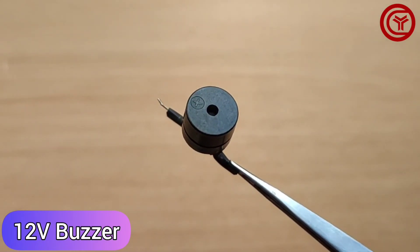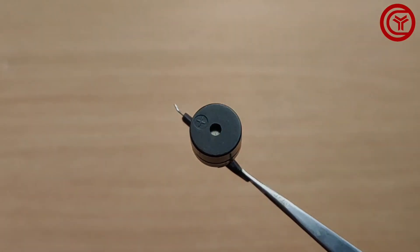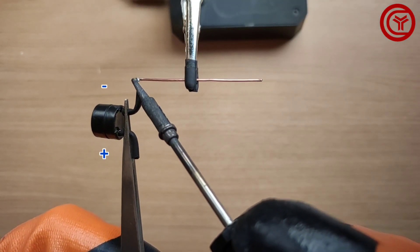Take a 12 volt buzzer and solder the buzzer negative on the copper wire.